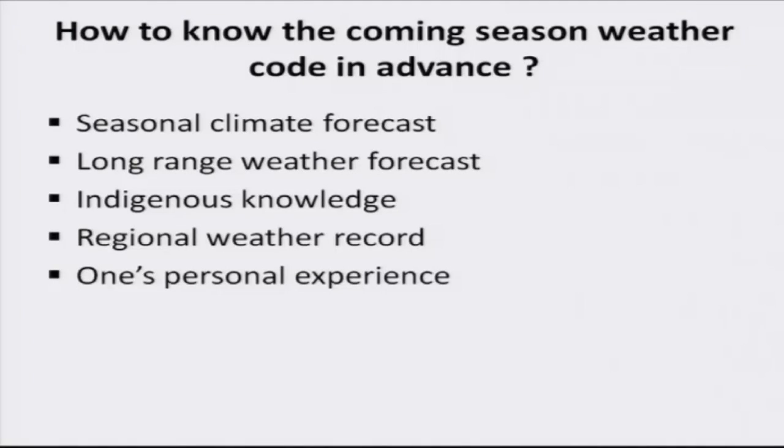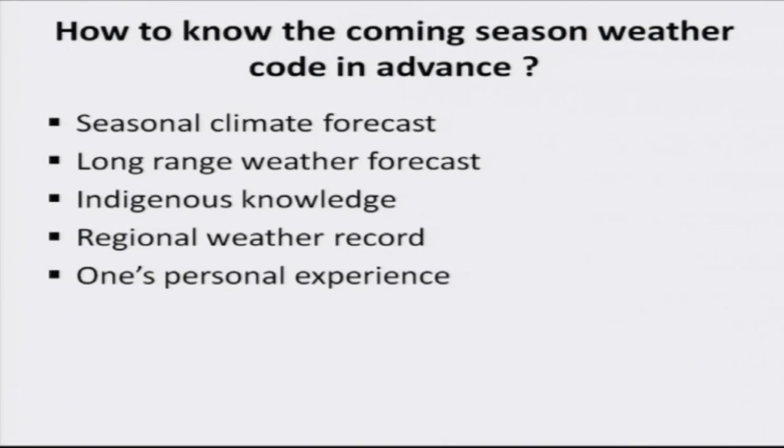Through RAINMAN software, seasonal climate forecasts are produced and given to farmers on a village basis, indicating whether the coming season will have normal, extremely high, or extremely low rainfall. Based on that, crop planning can be prepared. Another source is the long-range forecast given by the India Meteorological Department through statistical methods, issued about 45 days in advance of the season.